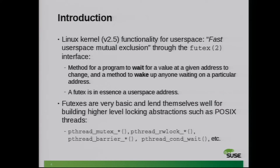When we talk about Futexes, we're actually talking about just the user space address — particularly a 32-bit address. Futexes lend themselves very well to build higher-level locking abstractions. If you use Linux, the primary example of this is through POSIX pthreads, such as implementing mutexes, read-write locks, barriers, conditional waiting, condvars — you name it.